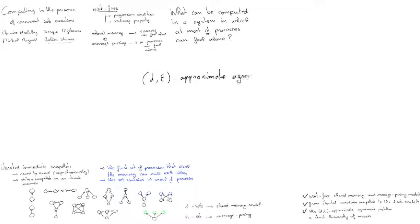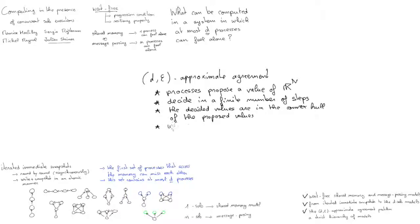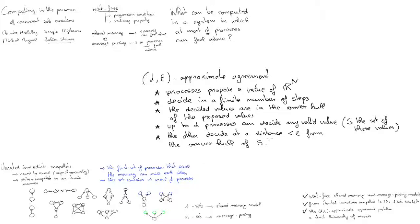So the D-epsilon approximate agreement is defined as follows. So it's a one-shot task. Processes propose a value of a large dimension space. They decide a value in a finite number of steps. All the decided values are proposed values. And the agreement property, up to D processes can decide any valid value. And all the other processes have to decide a value that is at a distance smaller than epsilon from the polytope formed by the values decided by the first processes. So this defines our D-epsilon approximate agreement.